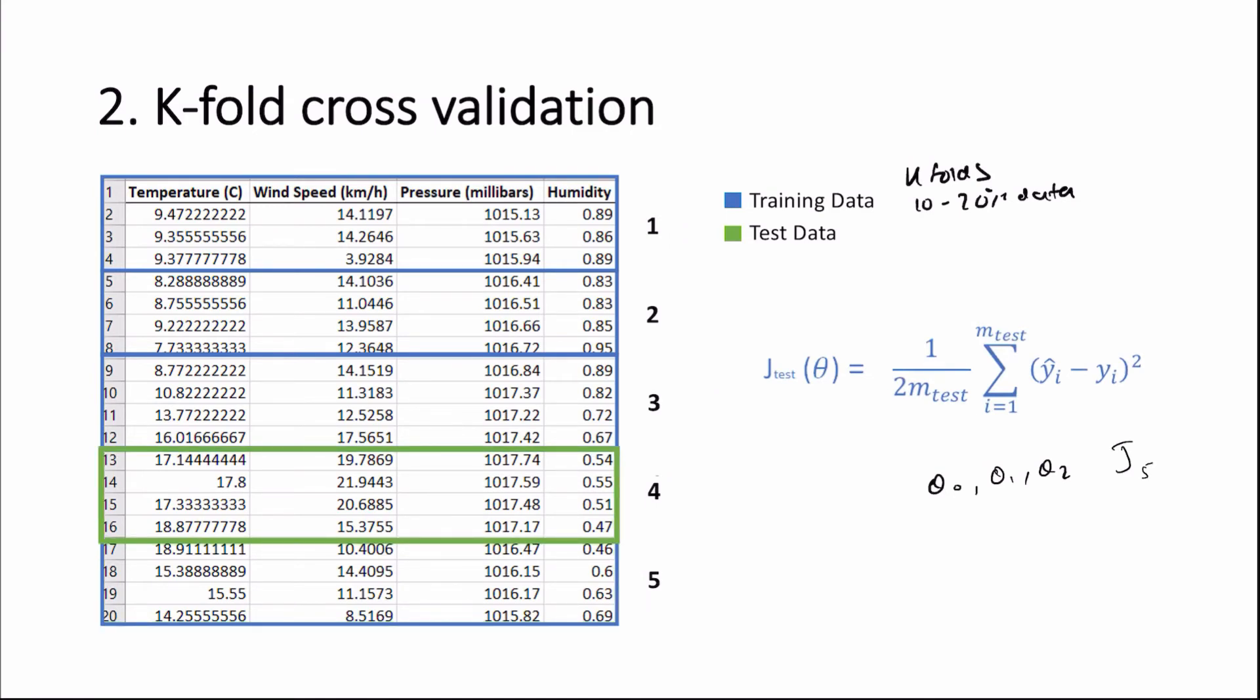So this process is then repeated, now using the fourth fold as our test data, and the first, second, third, and fifth fold as our training data. And again, this will produce another set of parameters, theta zero, theta one, and theta two, which is slightly different to the previous parameters, considering we're building the model on different data now. And the cost would also be slightly different, as we're using a different fold to test our data. So we'll now attribute this cost as j4.